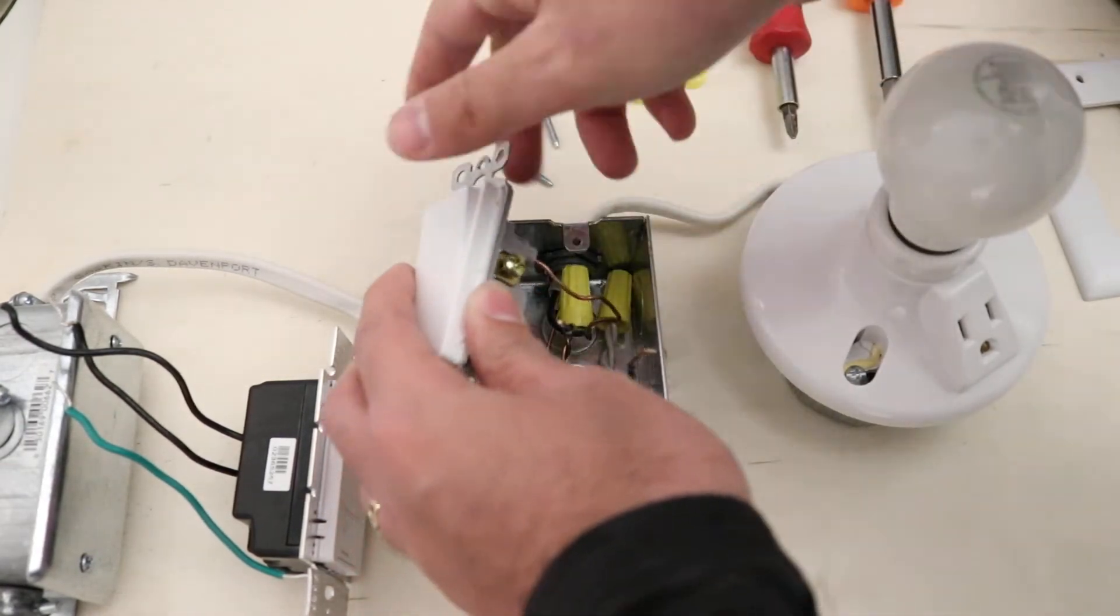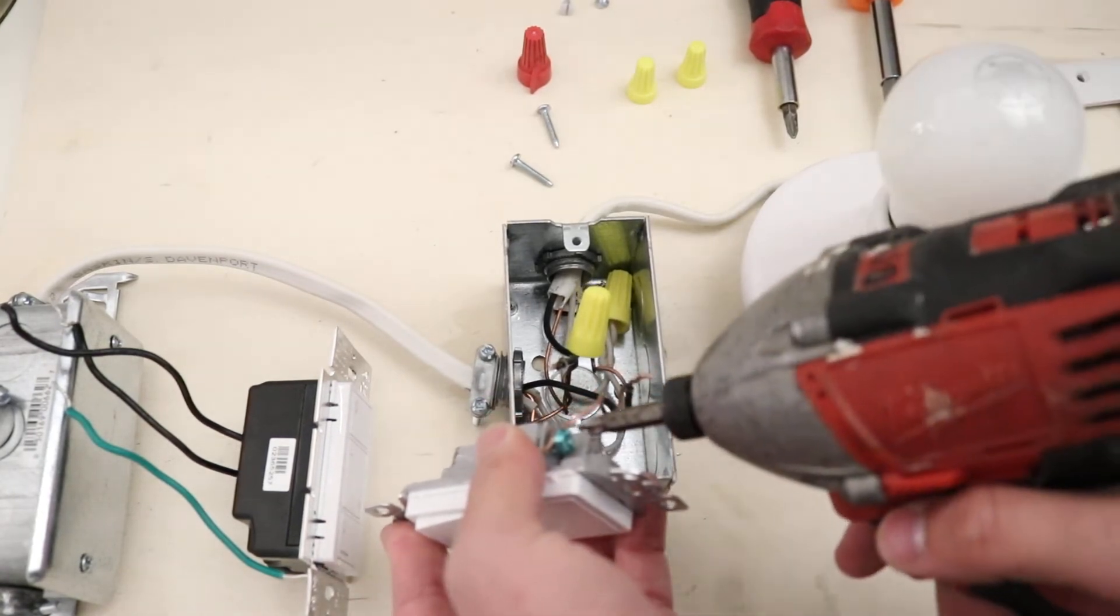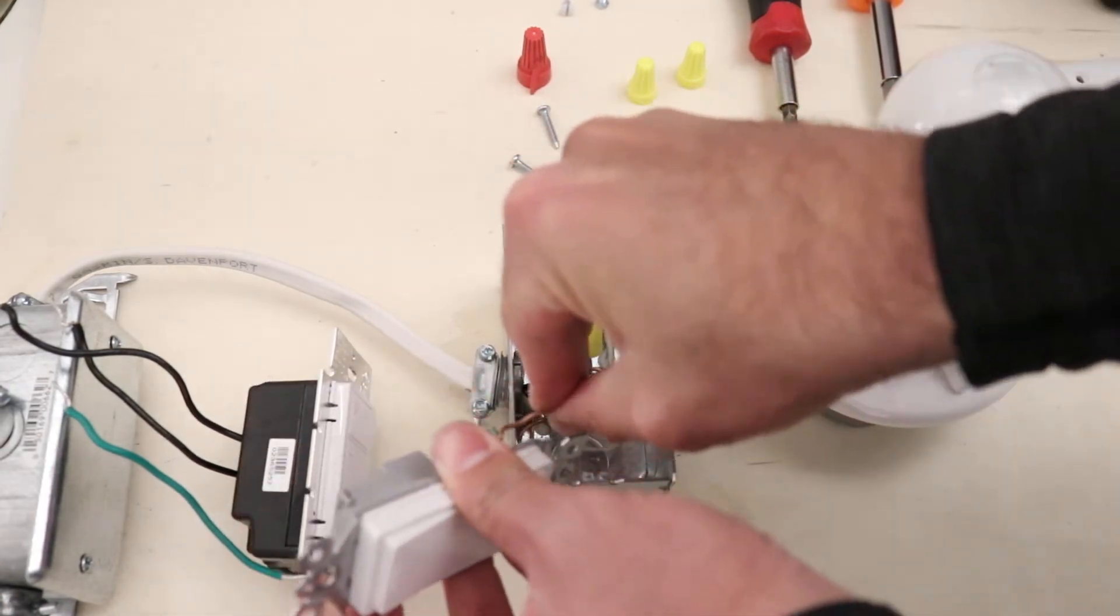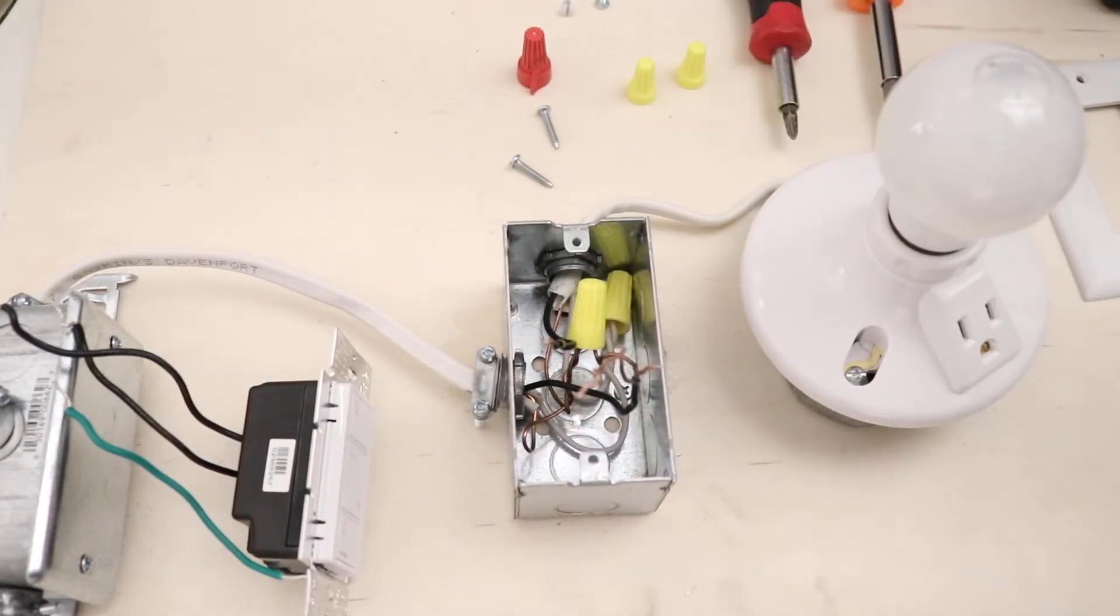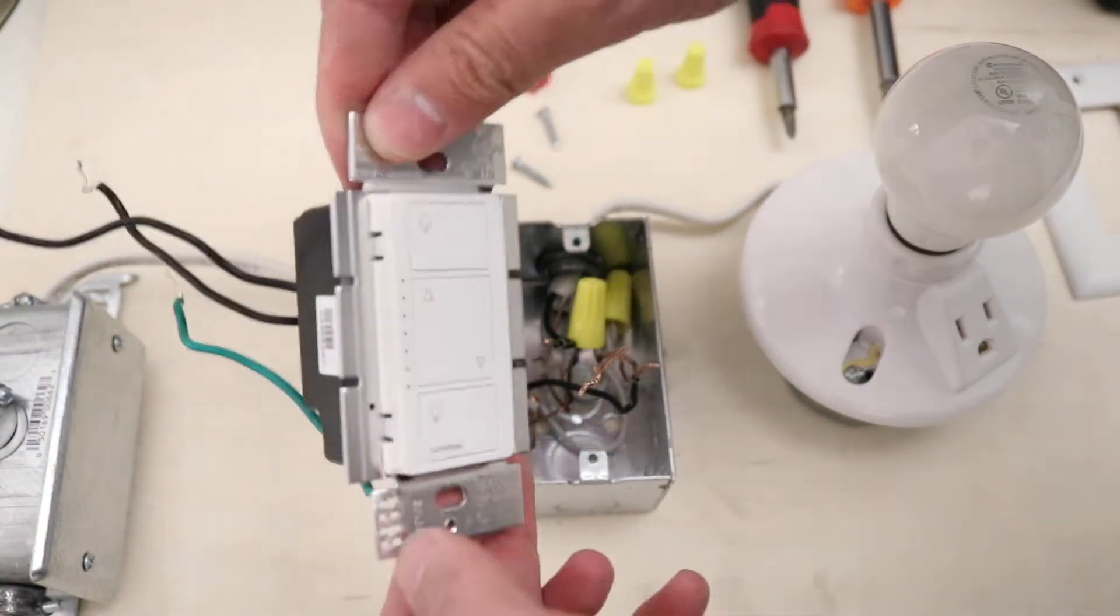We've unsecured the load wire and now we're just going to unsecure the ground wire. Sometimes these take a little twisting to get out. There we go. We've gotten it out. And now we're going to install our Lutron Caseta light switch right here.